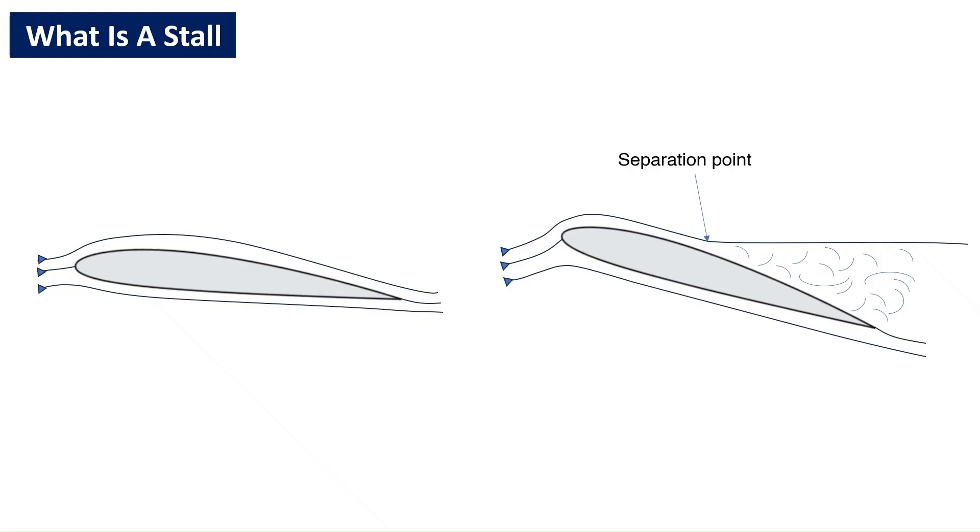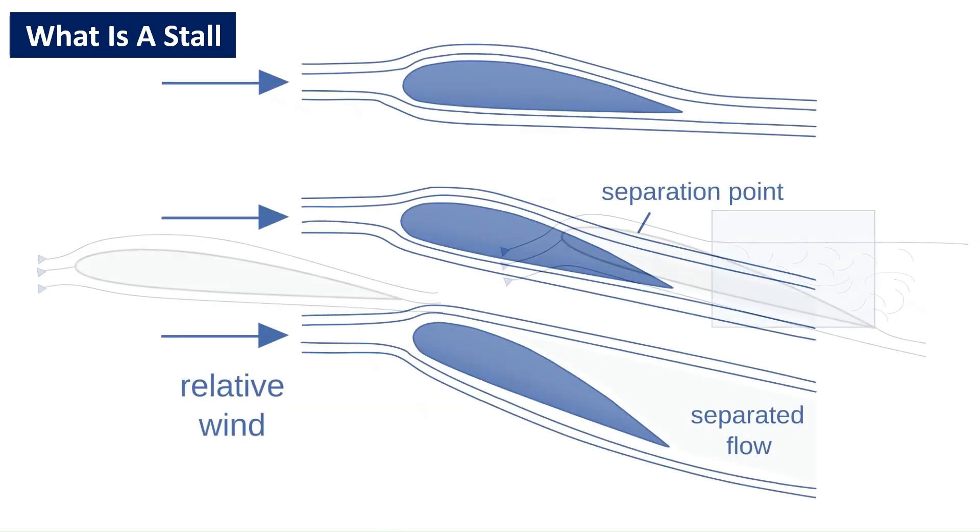The portion of the airfoil over which the flow has separated will generate very little lift. If this continues and flow is separated over the whole upper surface, the lift will dramatically decrease. The onset of flow separation is called stall. In this condition, increasing the angle of attack does not increase lift or even leads to a decrease in lift.